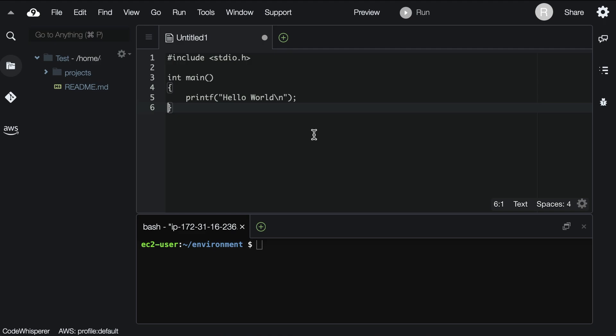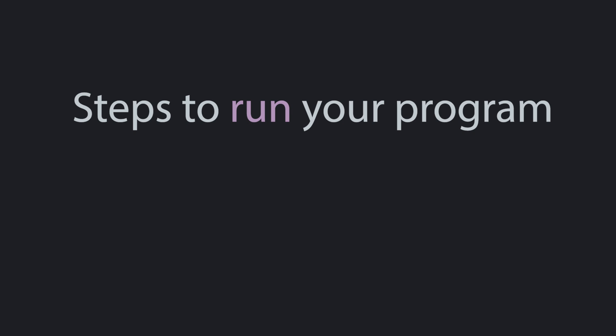Now that we've written our first program, we need to run it to see what it does. Every time you want to run your program, there are three steps: save your file, compile your code to a program, and run it.